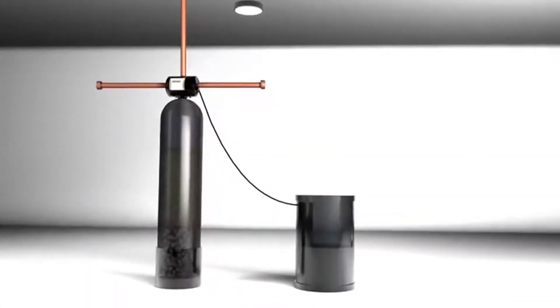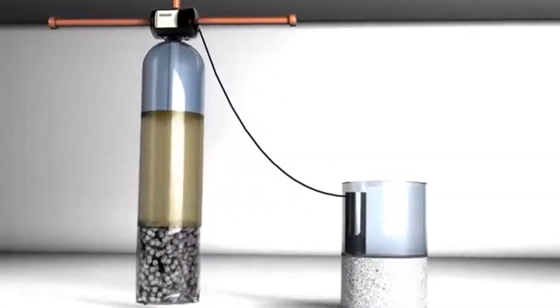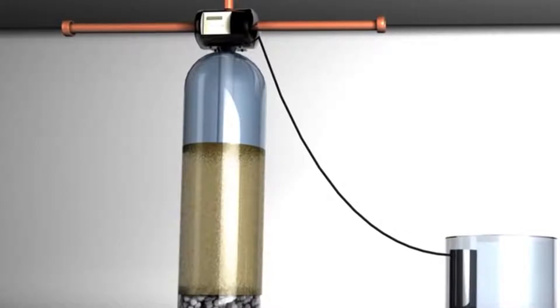Before we see the process, let's take a minute to identify the various parts of the system. The first area is the freeboard. Freeboard is the area where resin is allowed to expand. This area also allows the dirt that is collected on top of the resin bed to be flushed out.